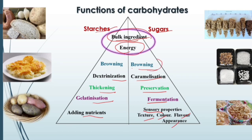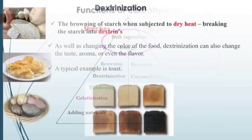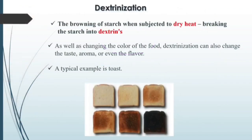Today we are going to study about browning — the different types of browning in depth — which will include dextrinization, caramelization, and one more term: the Maillard reaction. Let's start with dextrinization. The browning of starch when subjected to dry heat breaks the starch into dextrin.